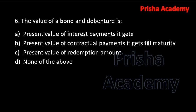Next question: the value of a bond or debenture is — present value of interest payments it gets, present value of contractual payments it gets till maturity, present value of redemption amount, or none of the above? The answer should be present value of contractual payments it gets till maturity.